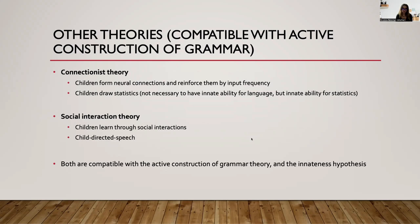Other theories that are compatible with active construction of grammar are connectionist theory and social interaction theory. Connectionist theory basically holds that children form neural connections that get reinforced by input frequency — they draw statistics from the data. This theory says we don't have to have an innate ability for language; our brains are very good at finding patterns, and we have an innate ability for statistical inference. Based on the statistics of the data we receive, we form connections that reinforce a particular pattern — and that's how connectionist theory explains how language is acquired.